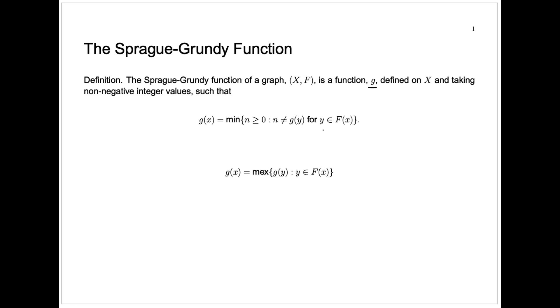A follower of the node is just some other node where there's a path or an edge leading from x to y. So if you look at all the followers of x, g of x is the minimum number that's not the value of g for some one of the followers.